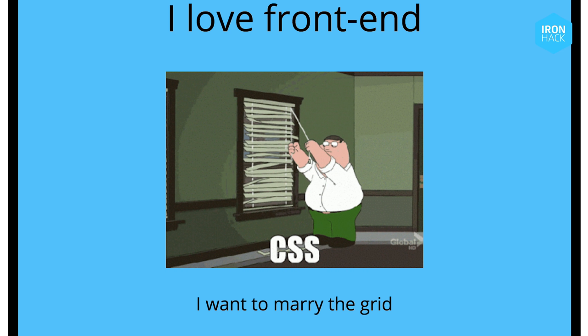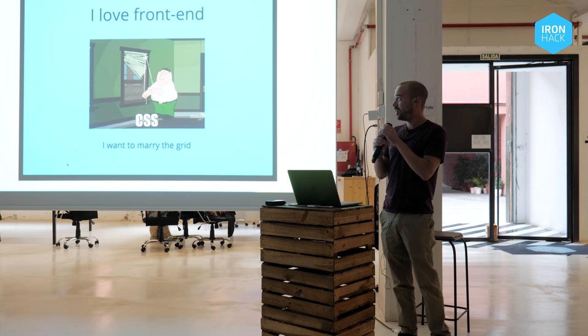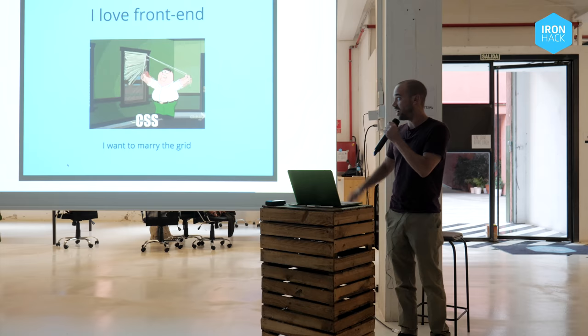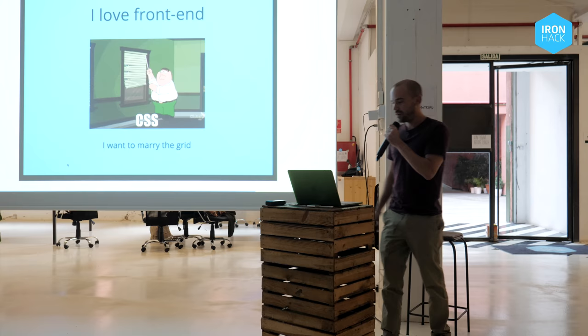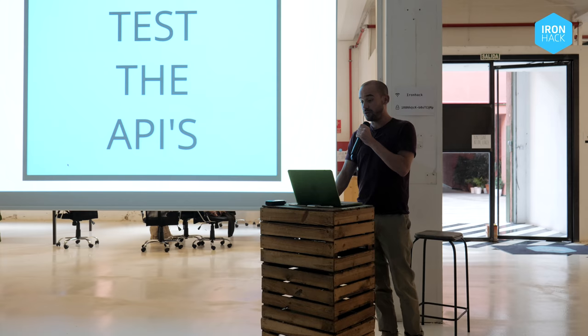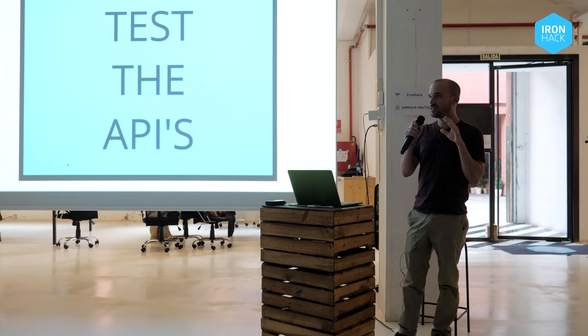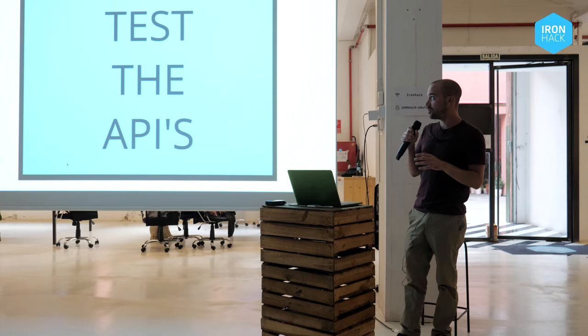I learned that I love front-end. CSS can be a pain sometimes, but I love tweaking and doing animations and stuff. I used CSS grid, which is not something we learn in the bootcamp, but I decided to go for it and give it a try. If I had to start again, I would probably test the APIs first. Don't be afraid of the APIs — just really dive into them, look for the documentation, and apply them in your project, and everything's going to be fine. Don't do like me, please.